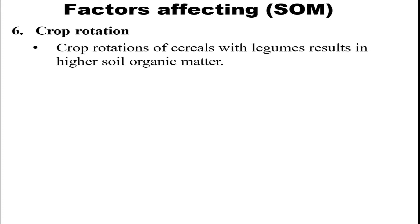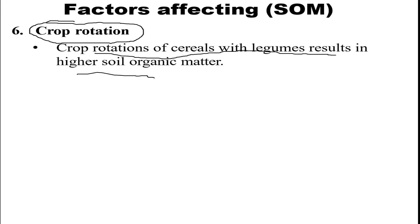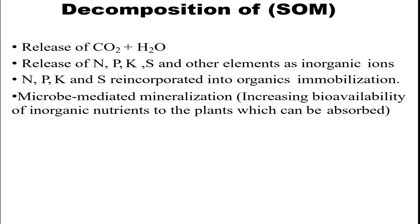Another factor is crop rotation. Crop rotation of cereals and legumes results in higher soil organic matter. This is another important factor that helps maintain SOM.